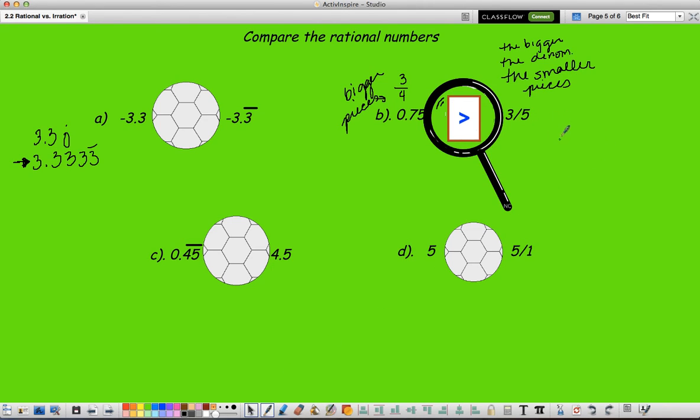The other way that we can do this is we can turn it into a decimal, which I know that I multiply both of them by 2, and this gives me 6 tenths, and 6 tenths is definitely smaller than 75 hundredths.